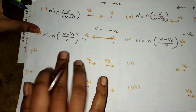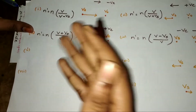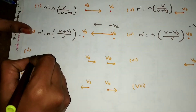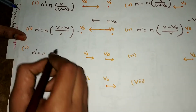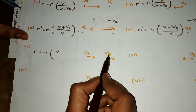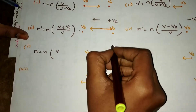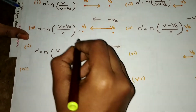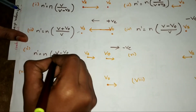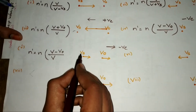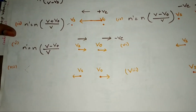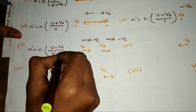The real challenge is when both source and observer are moving. Sub-case: Observer moving in the positive direction — number line says positive, but trick says negative — so V minus V0 in numerator. Source moving in positive direction — number line positive, trick says negative — so V minus Vs in denominator. Thus N-dash = N × (V − V0) / (V − Vs).